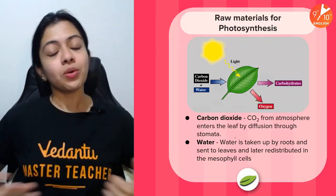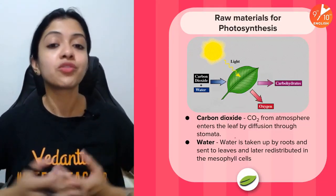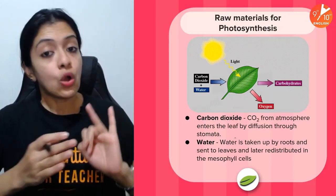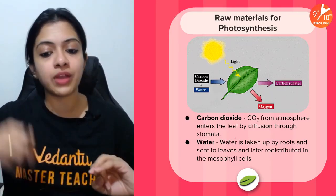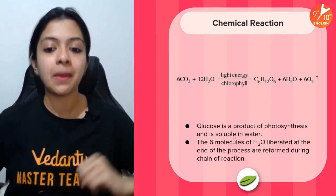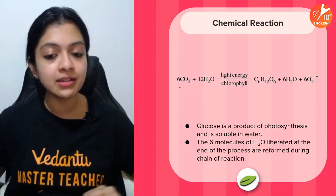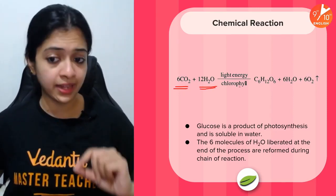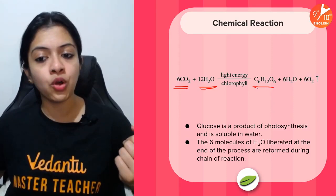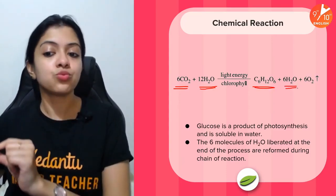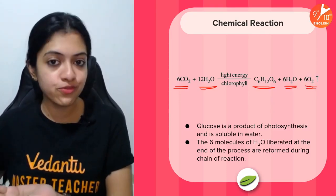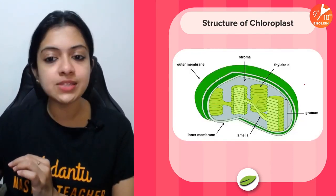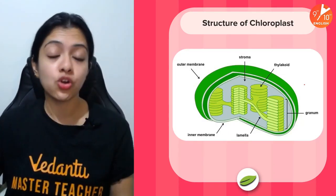So, photosynthesis — what are the raw materials? Carbon dioxide, which plants obtain from the atmosphere, and water, which plants obtain from the soil through the roots. The chemical reaction of photosynthesis is: 6CO₂ + 12H₂O, in the presence of light energy and chlorophyll, gives one molecule of glucose, six water molecules, and six molecules of oxygen as a byproduct.